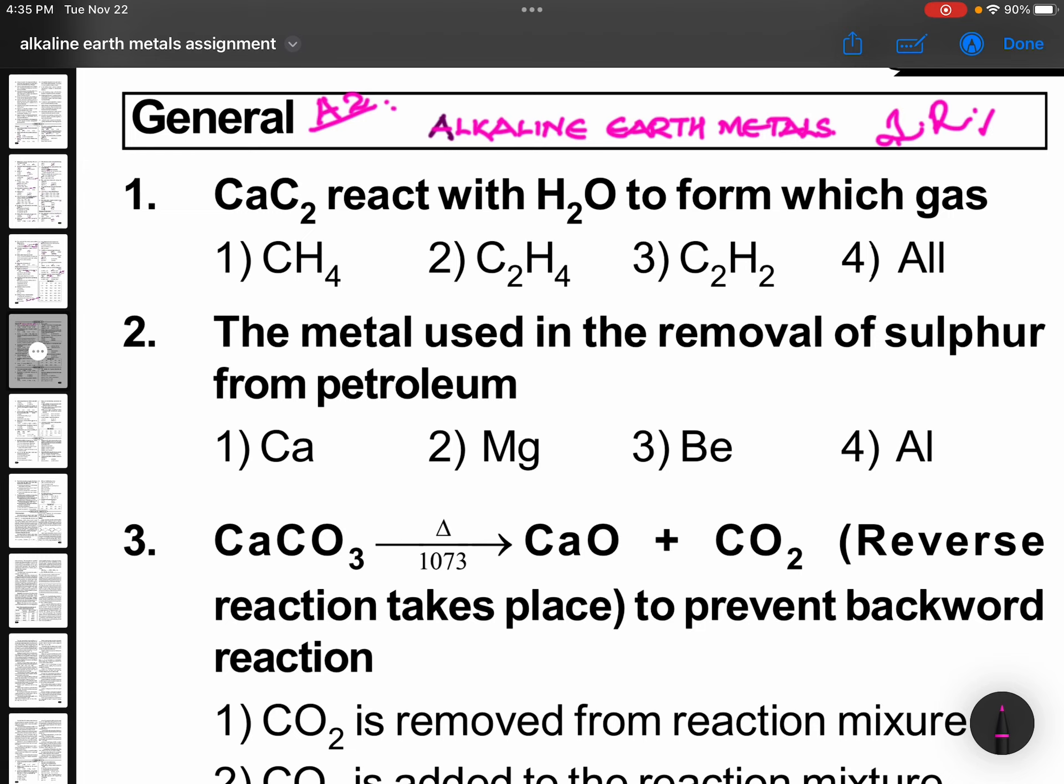CaC2 reacts with water to form which gas? Calcium carbide will give you acetylene. Now if you have Al4C3 or Be2C, they form this one. Your answer is C2H2.